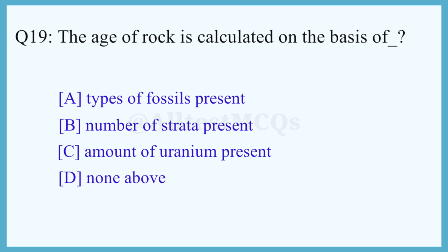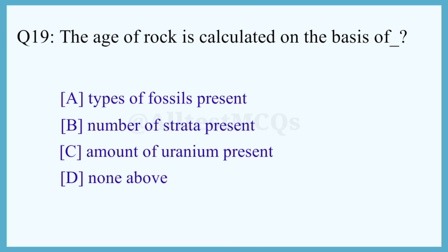Q19. The age of rock is calculated on the basis of? The correct answer is option C: Amount of uranium present.